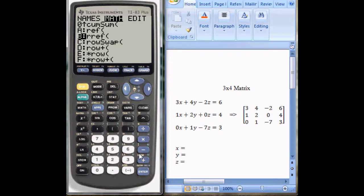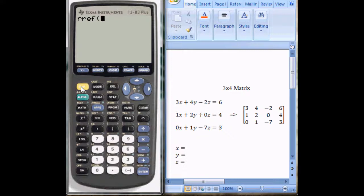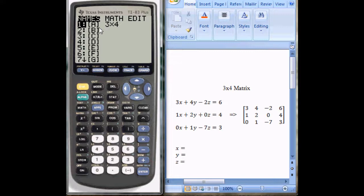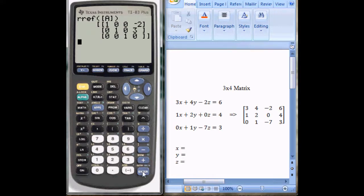Press enter, go back to the matrix, and select the matrix that we just put the information into: matrix A, enter, close parenthesis. This puts the matrix into reduced row echelon form.